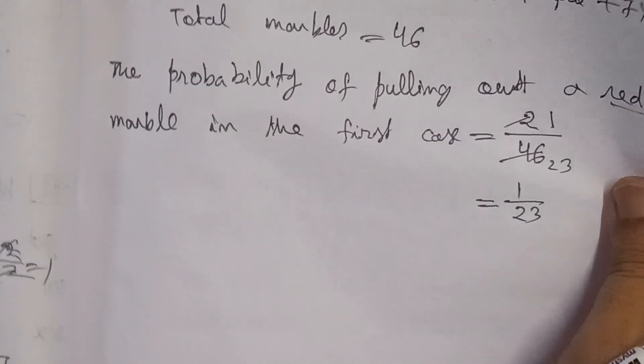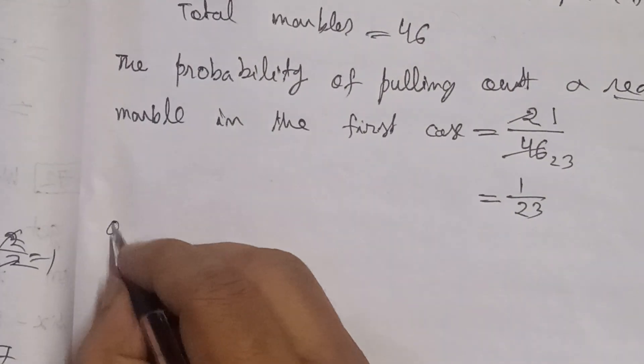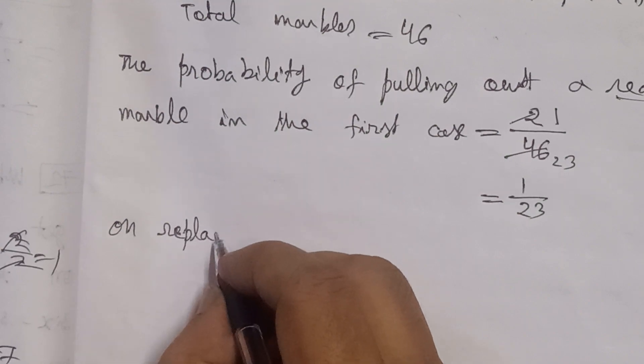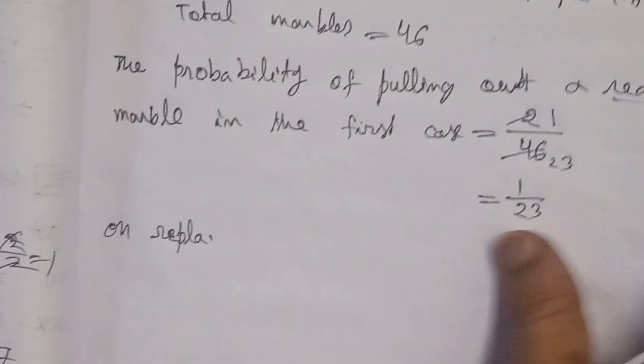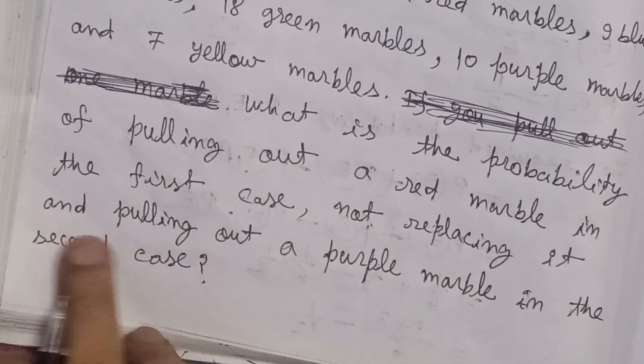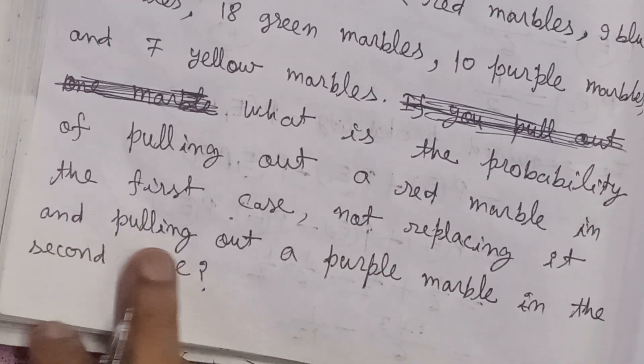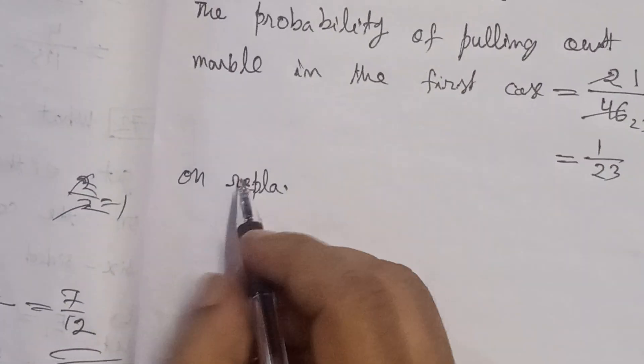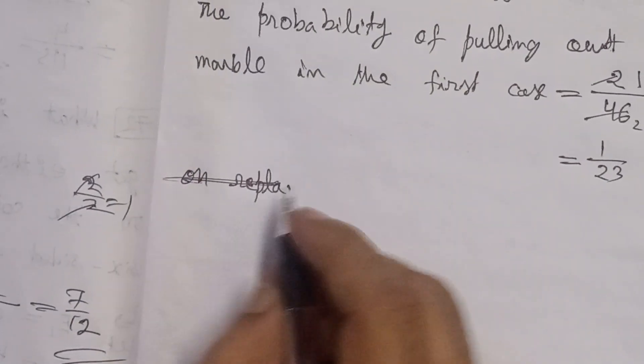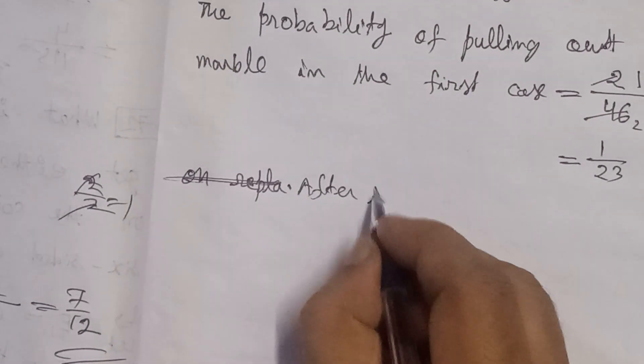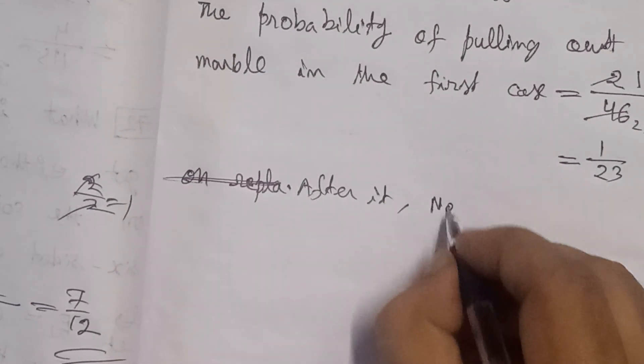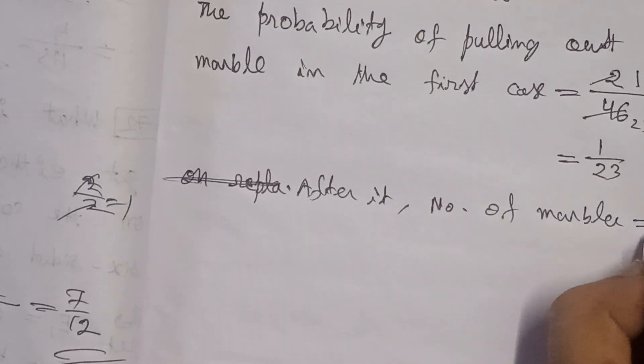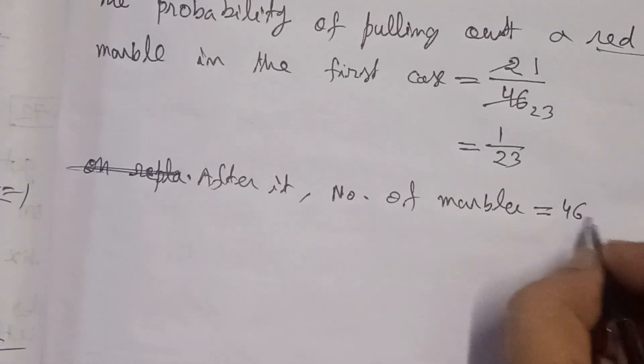we don't replace it, so how many will remain? After it, the number of marbles remaining in the bag: one has already been drawn, so after drawing from 46, 45 marbles will remain.